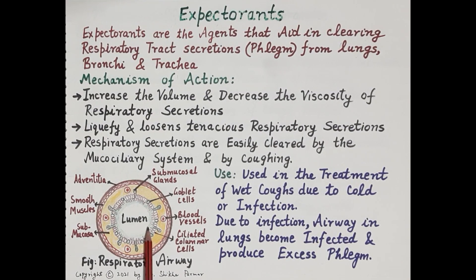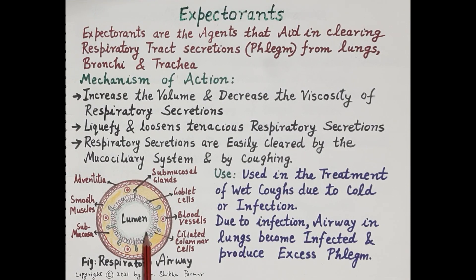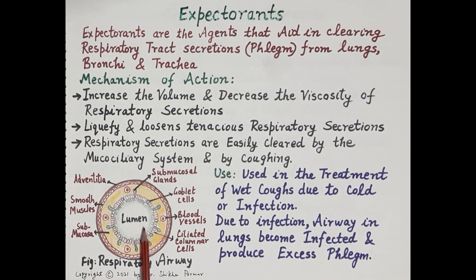These irritants are trapped in the mucus and then coughed out. The cilia — hair-like structures on the ciliated columnar epithelial cells — push mucus towards the pharynx so that it can be easily removed.